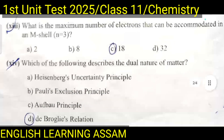Question number thirteen: What is the maximum number of electrons that can be accommodated in the M shell where n equals 3? A. 2, B. 8, C. 18, D. 32. The correct option is C — 18.